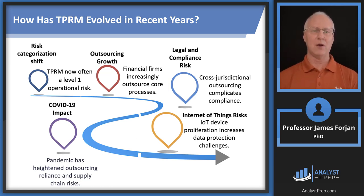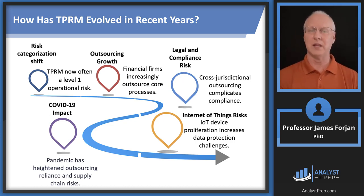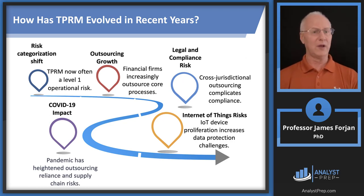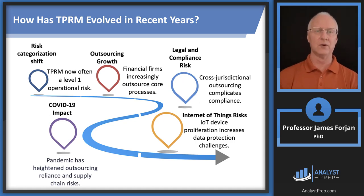This is a really interesting slide, but I'm not quite sure what kind of exam question we could come up with about the evolution of third-party risk management. Let's go through the headings. Risk category shift: third-party risk is probably now a level-one operational risk, right at the top of the desk. We've clearly been outsourcing core processes not just since the 2008 financial crisis but going back to at least the early nineties.